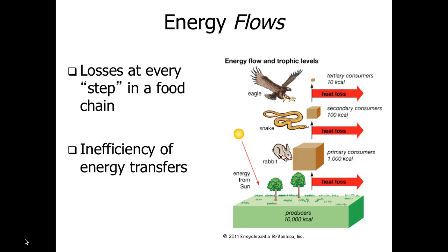An example of this energy flow: we have a chain represented rather than a web, because it's just showing one potential path. We notice again that 10% transfer or 90% loss at each level. This is a highly inefficient process. You may be asking where did all that energy go — why does only 10% make it to the next level?